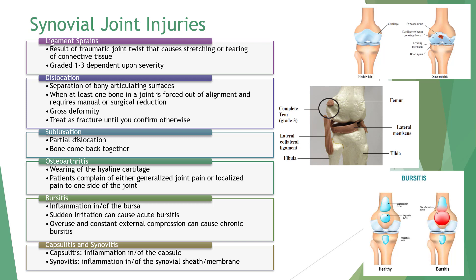Synovial joint injuries. Synovial joints have hyaline or articular cartilage, a fibrous connective tissue capsule, ligaments, a capsule with synovial membrane, a joint cavity with synovial fluid, blood and nerve supply, muscles, and menisci, also known as fibrocartilage.